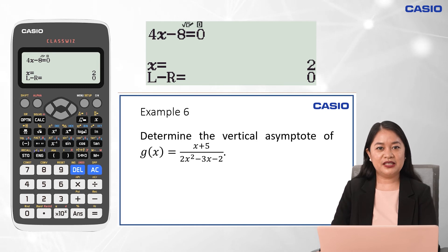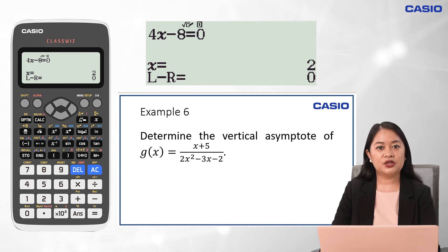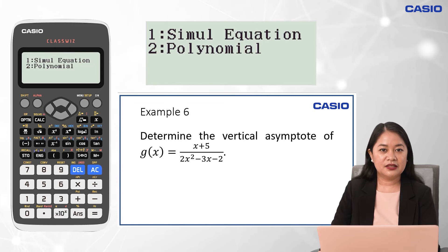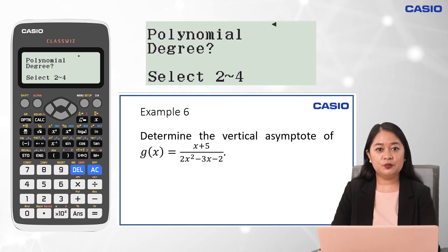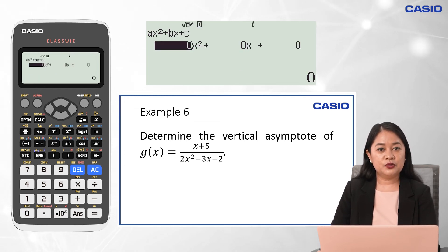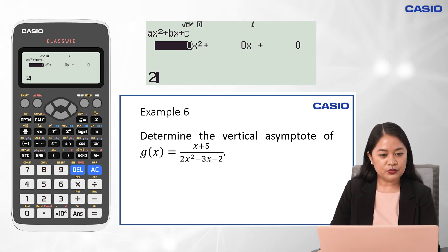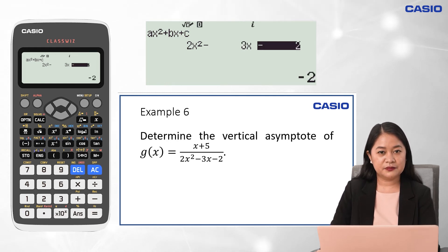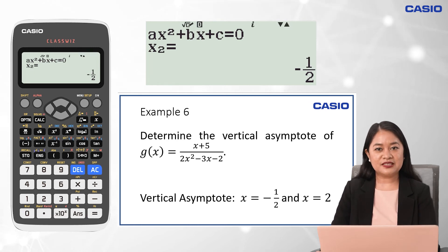Let's try another example identifying the vertical asymptote. The process is the same as identifying the domain. Since the denominator is a quadratic expression, we use the equation menu. Press Menu, Alpha, and Negative Sign. Choose Polynomial by pressing 2, then input 2 for the degree. Input each coefficient and press Equal: 2 for A, negative 3 for B, and negative 2 for C. Press Equal to determine the zeros. The vertical asymptotes are x equals negative 1 half and x equals 2.